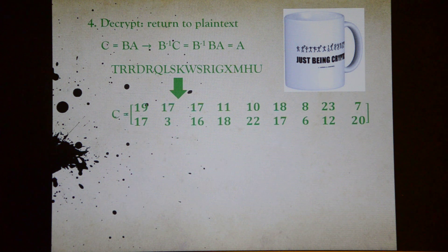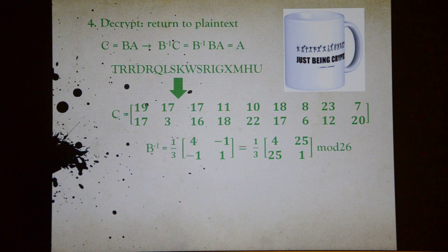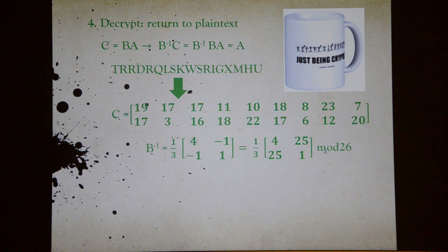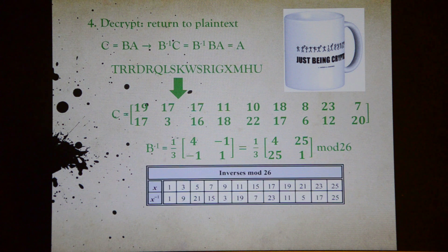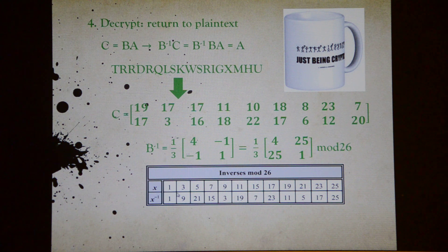Let's look at the example. First, convert letters into numbers. Then we find B inverse and convert it into mod 26 as well. As we can see here, we are dividing each number by 3 mod 26, which is the same thing as multiplying each number by the multiplicative inverse of 3 mod 26. The specific method to calculate modular multiplicative inverse involves the Euclidean algorithm, which we will not discuss here. However, there is a chart listing all multiplicative inverses of invertible elements in mod 26. As we can see, the multiplicative inverse of 3 mod 26 is 9.